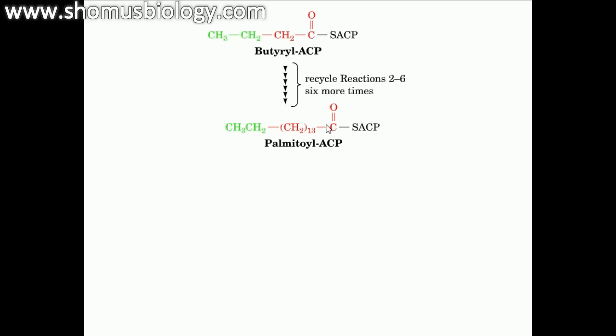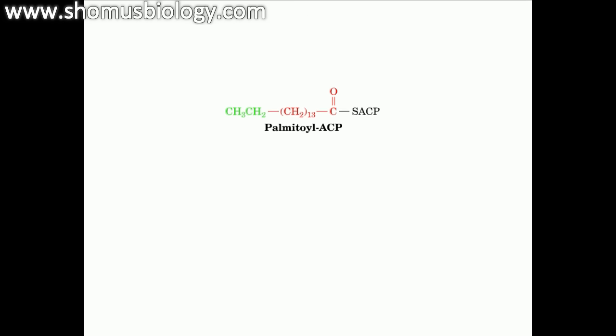To produce longer fatty acids, this butyryl-ACP needs to recycle and do the recycling reactions from 2 to 6 or more times that will keep on adding the hydrocarbon content to it. And in this case, it enters the pathway at step 2 in the place of the acetyl-ACP to produce the palmitoyl-ACP. That is the part where they are involved with and the cycle keeps on repeating at least 6 times to get what is known as the palmitoyl-CoA.